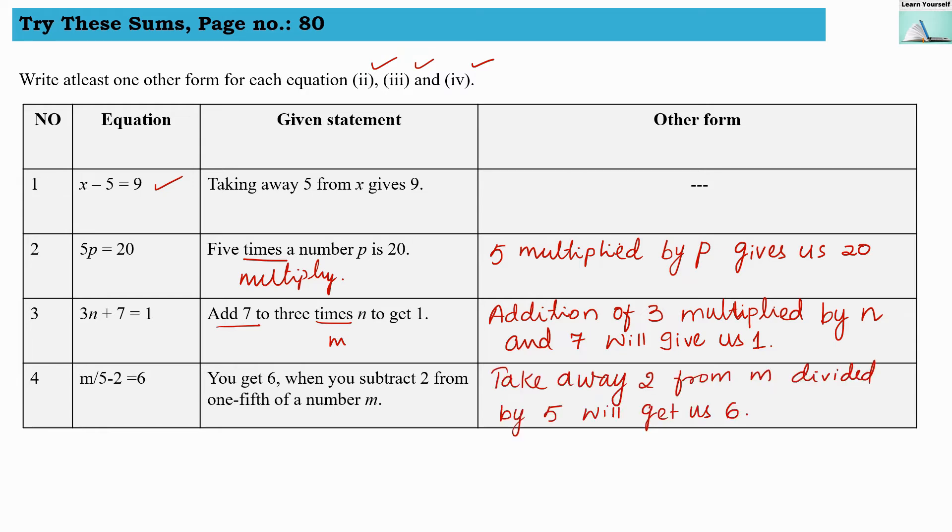So here the term subtract they have used, we are going to use take away. So take away 2 from m divided by 5. Here they have said one-fifth of m. So we are converting that into divided by 5 will get us 6. So we are writing answer later.